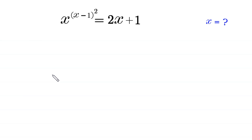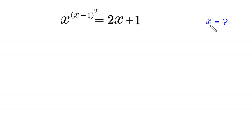Hello, welcome to how to solve this very nice exponential equation. x to the power x minus 1, whole squared, is equal to 2x plus 1. We need to find all possible values of x.